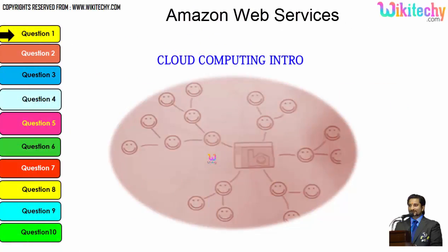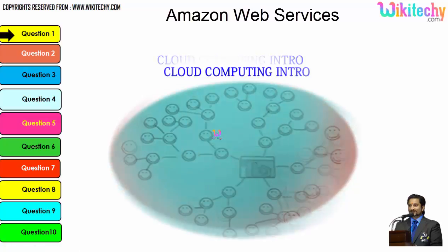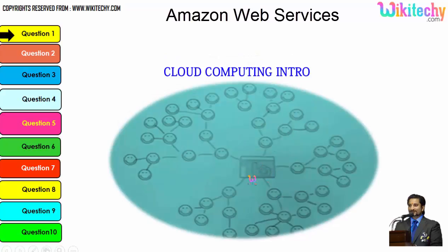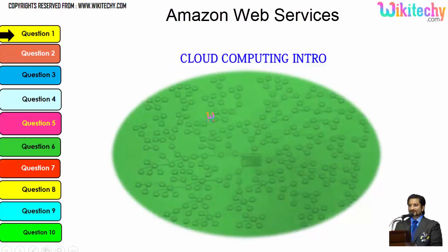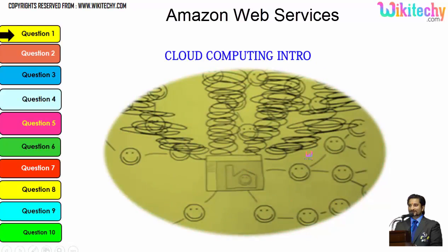Let's talk about the cloud computing intro. This is a computer connected to a server, and this server is monitoring the computer. Once the network becomes bigger, the monitoring becomes tougher. If more computers are added, the network grows larger and the monitoring system becomes really slow. There is a possibility that the network crashes or the server couldn't monitor specific networks.